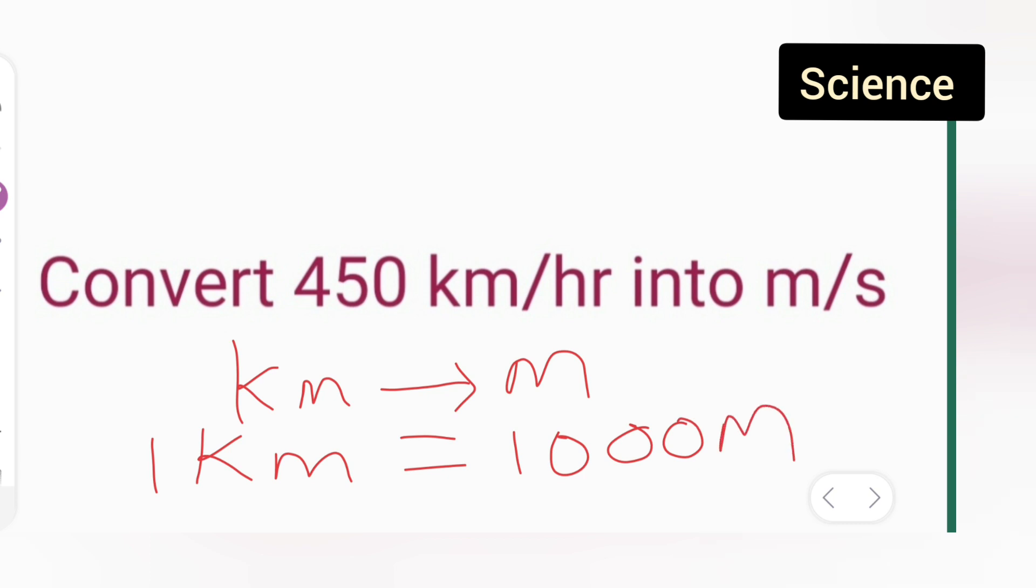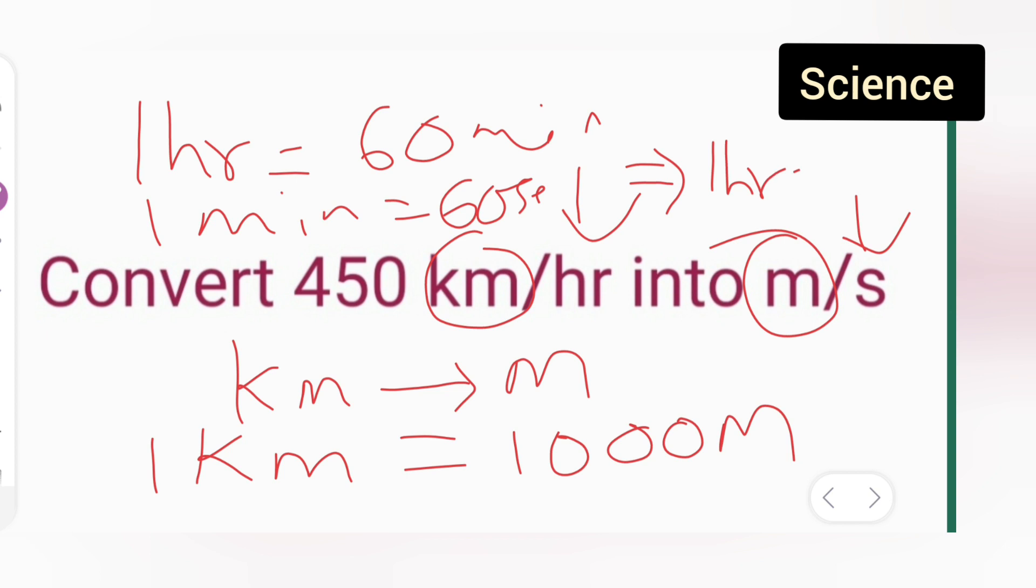Next, kilometer I have converted into meter, now what about this one? Hour is given, so 1 hour is equal to 60 minutes, and 1 minute is equal to 60 seconds. This will imply that 1 hour is equal to 3600 seconds.